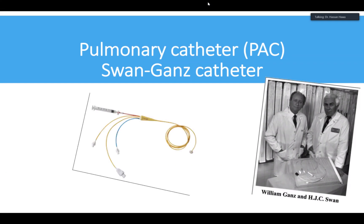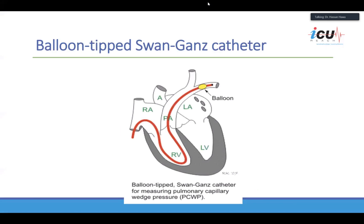The pulmonary artery catheter — or Swan-Ganz catheter — was invented by Ganz and Swan in 1970. It's a balloon-tipped catheter where you can inflate and deflate the balloon once inserted. You insert it via the femoral vein, subclavian, or jugular vein, advancing to the right atrium, right ventricle, then to the pulmonary artery. Here you can inflate the balloon.